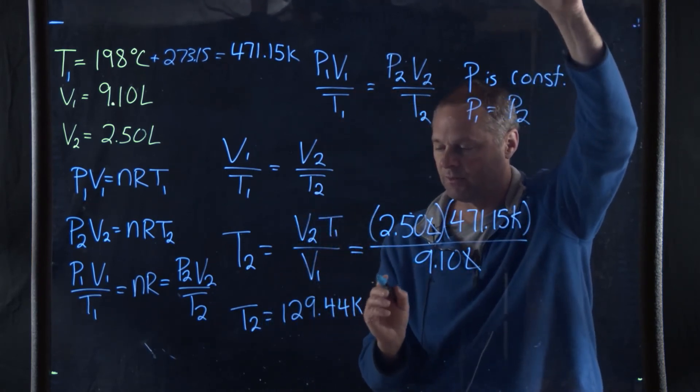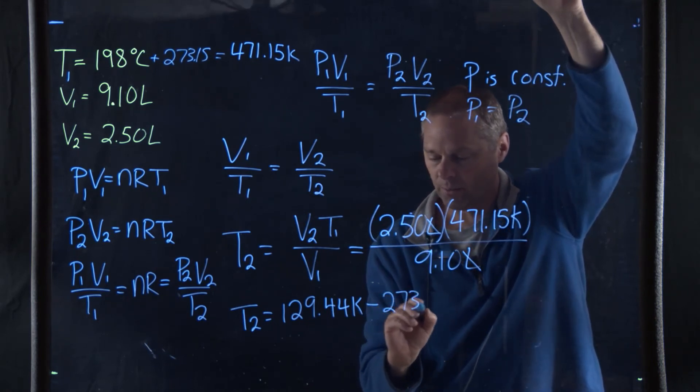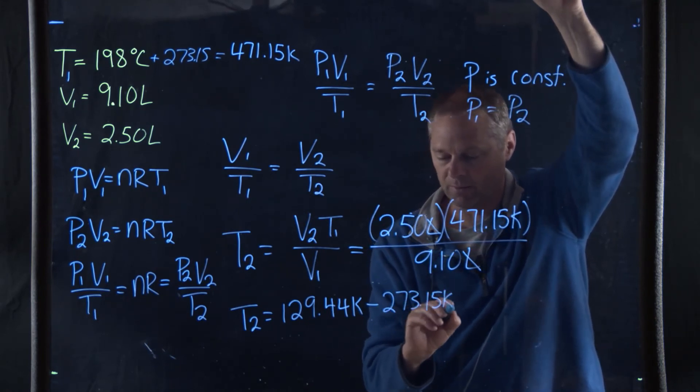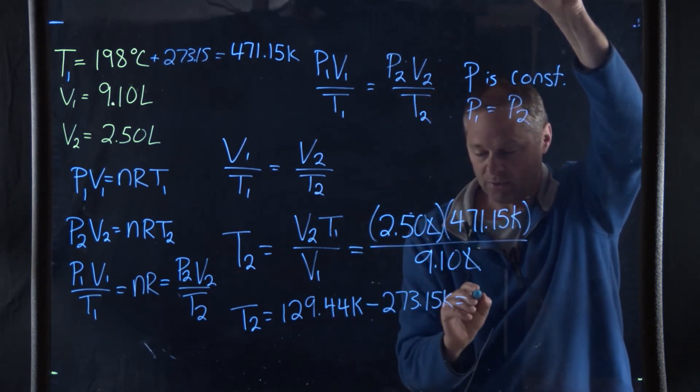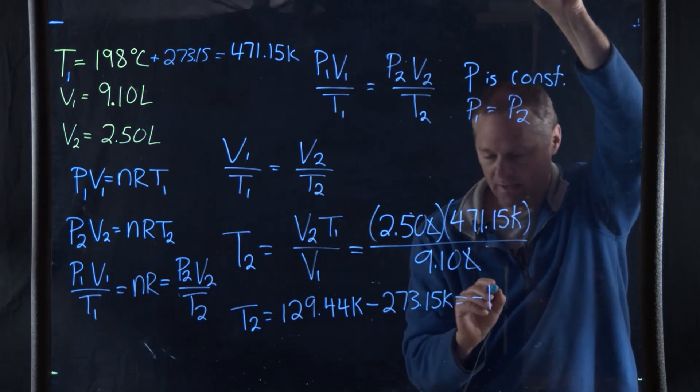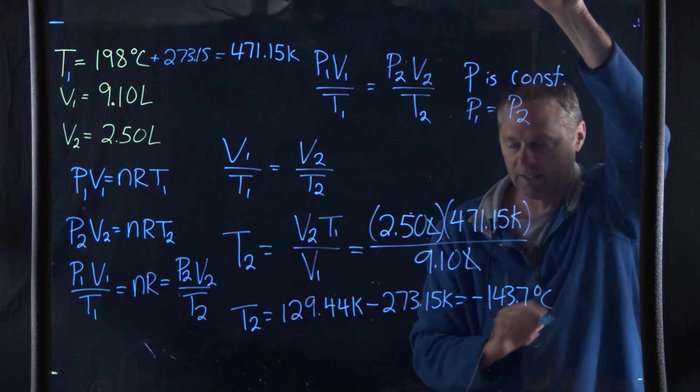If we want to get this in terms of degrees Celsius, we have to subtract 273.15 Kelvin from this. And this will get our temperature into degrees Celsius. And so this becomes negative 143.7 degrees Celsius.